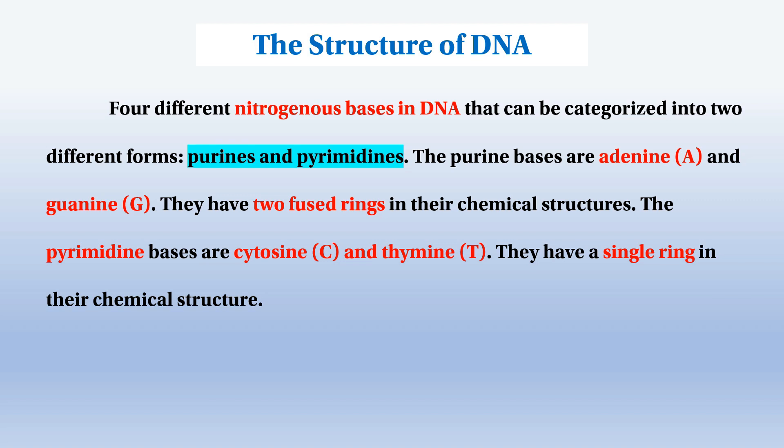In DNA, the nitrogen bases of double ring structure are the purines — adenine and guanine. The pyrimidines — cytosine and thymine — are the single ring structures.